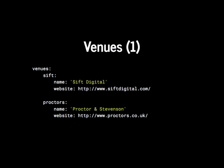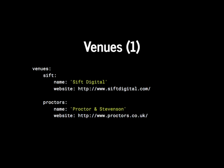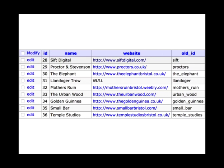This is how it used to look. We had a venues.yaml page with a venues key, and each venue was listed. The keys like 'sif' and 'proctors' were essentially our IDs. We stored just the name — essentially the label — and the website to link to. That got transformed into a database table using incrementing IDs. The name got mapped into its own column, as did the website, and I also kept the old ID string for reference.